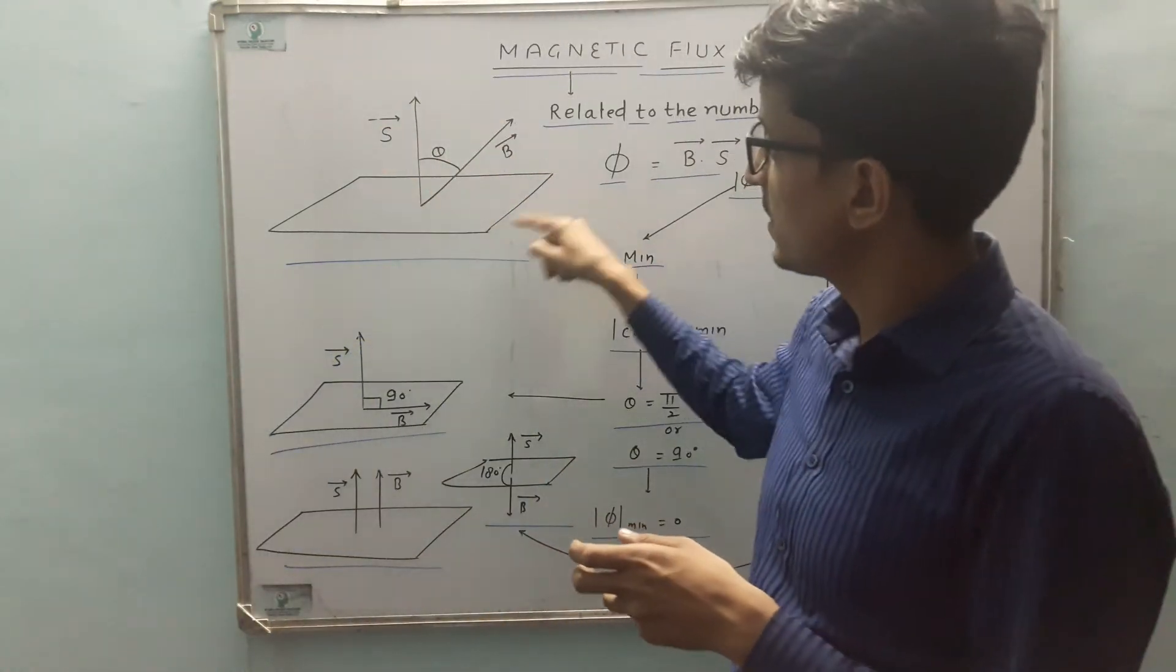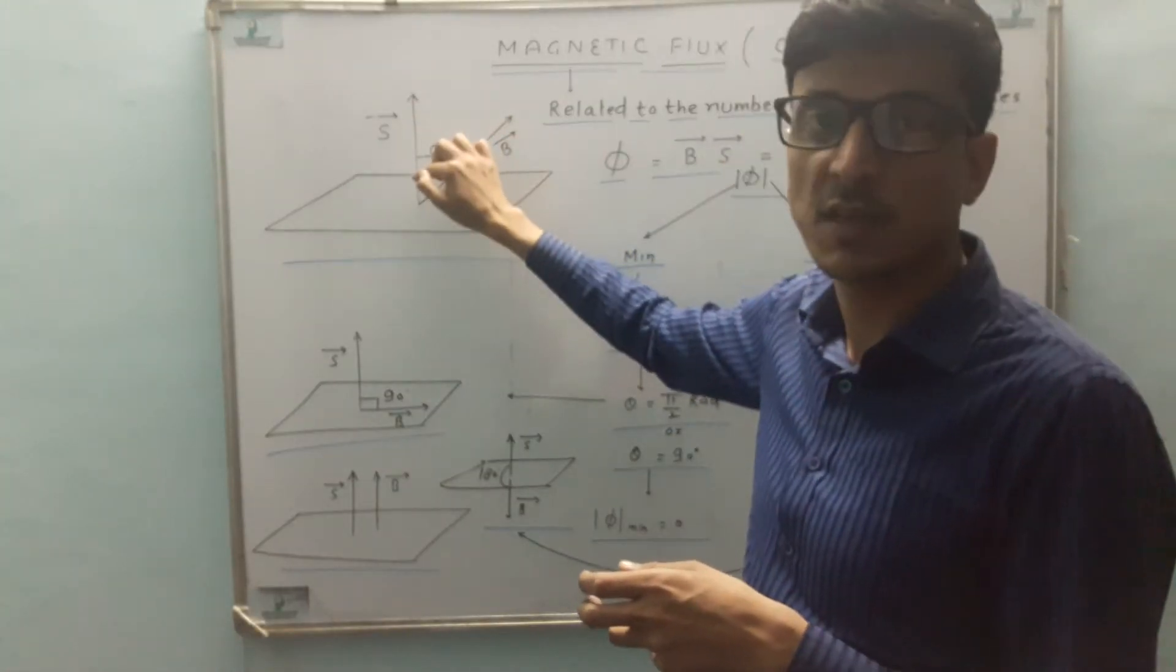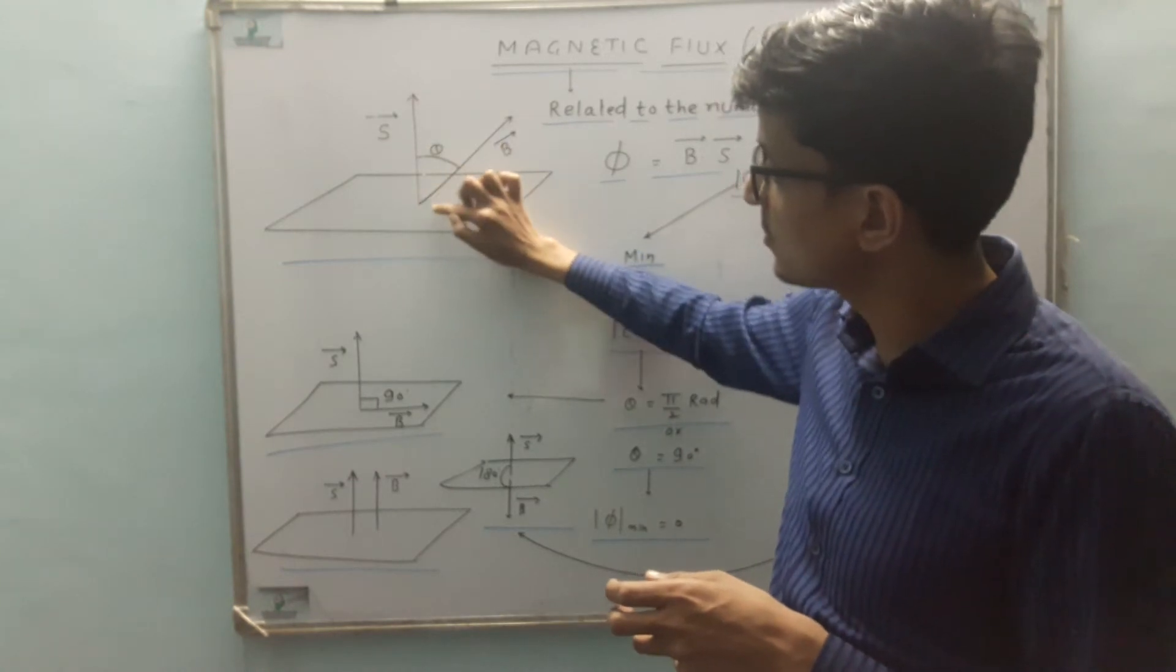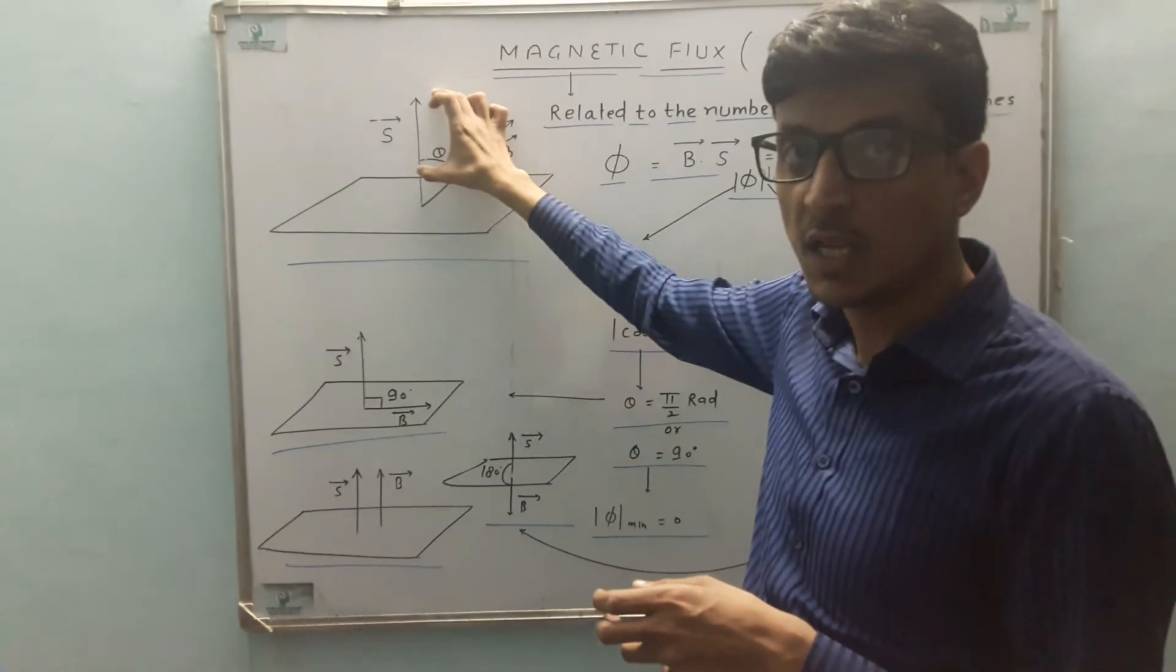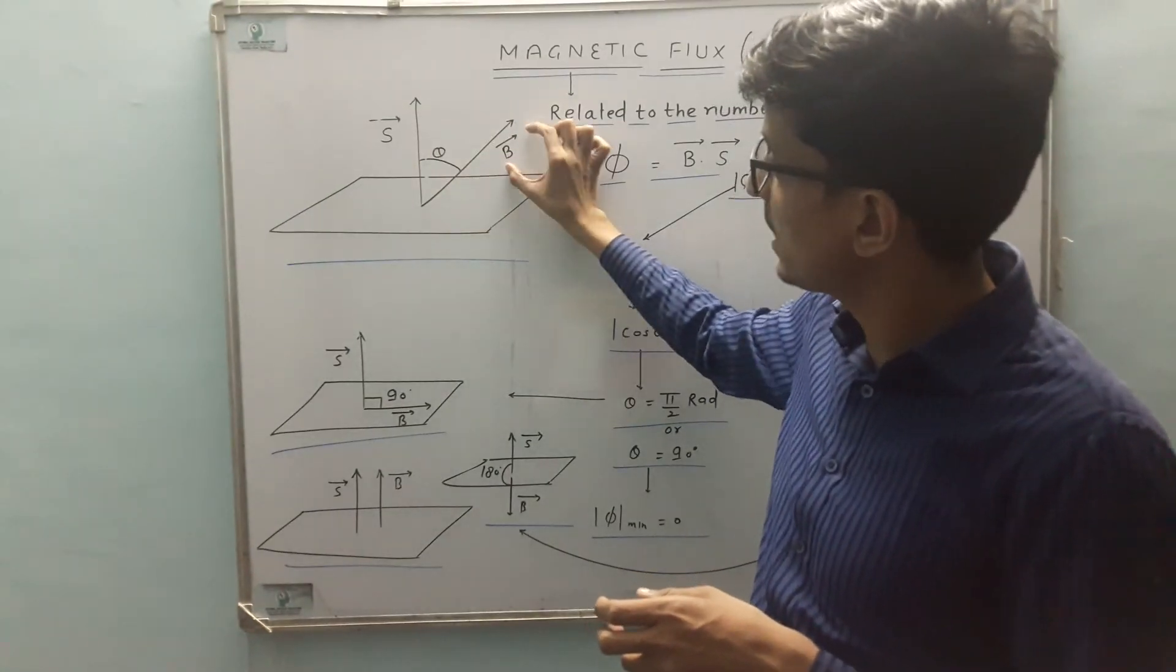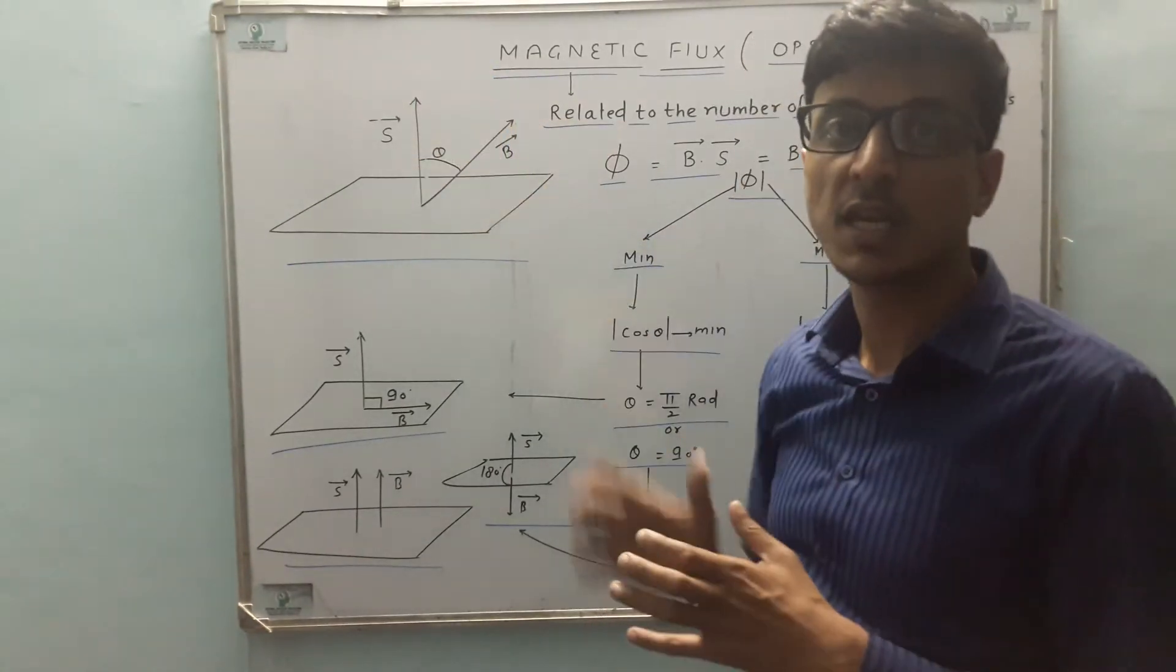Suppose we have an open surface. This is the area vector of the surface which is perpendicular to the surface. You can see that its angle is 90 degrees between surface and area vector. Suppose the magnetic field makes an angle theta with the area vector.